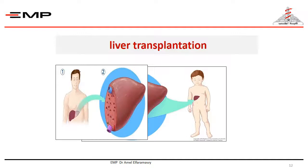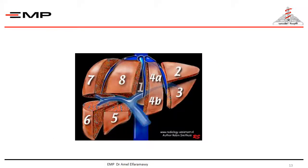Liver transplantation is a surgical procedure to replace a diseased liver with a healthy one from a healthy donor, most probably a compatible family member sharing the same blood group. As living-related liver transplantation is the only type approved by Egyptian law so far, cadaveric transplantation is not yet approved. It is the only treatment for irreversible end-stage decompensated liver disease. The liver can be divided into eight segments, each with its own branch of hepatic artery, hepatic vein, portal vein, and hepatic duct.